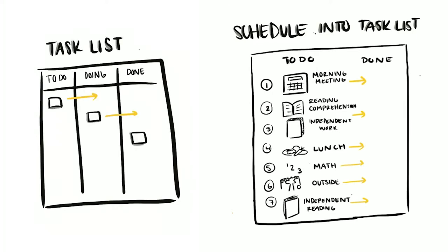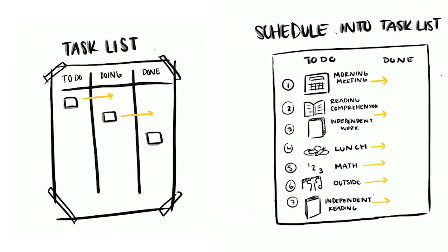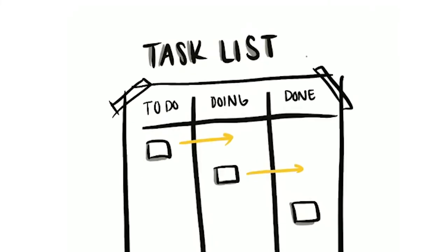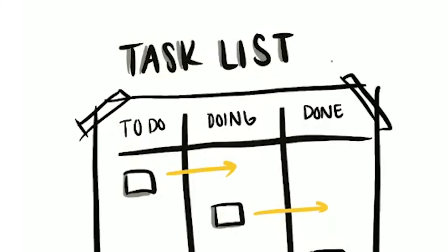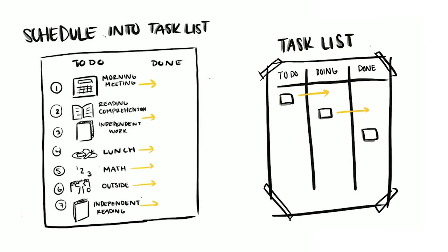The Kanban board is a strategy used by the auto industry to show the different steps in the process of building. You can do this in your workspace as well, with three different columns: to-do, doing, and done. Put all items on the far left-hand side. As you progress, move them to the doing column, and once they're complete, put them in the done column.